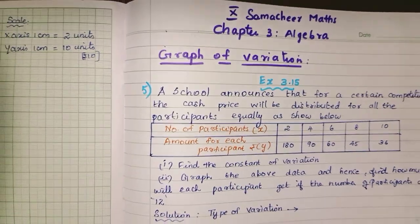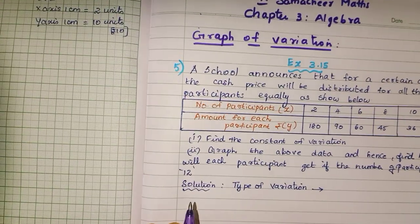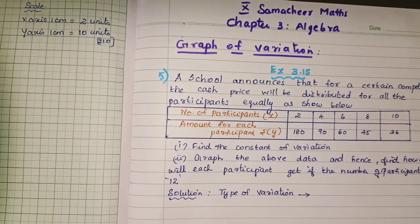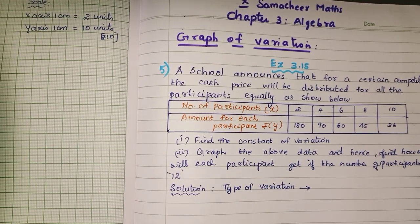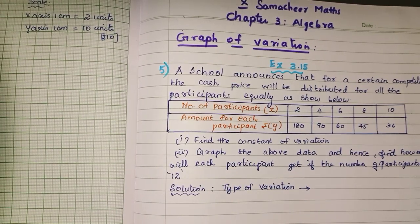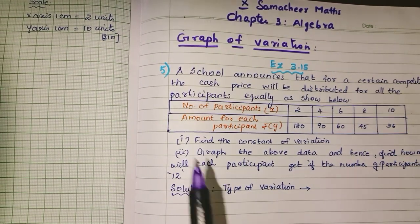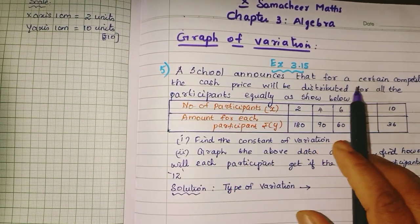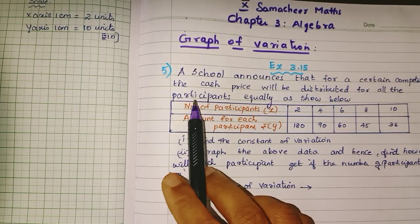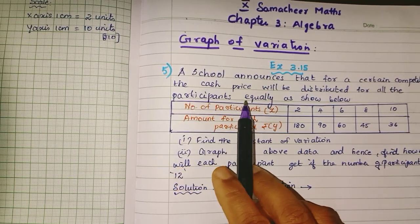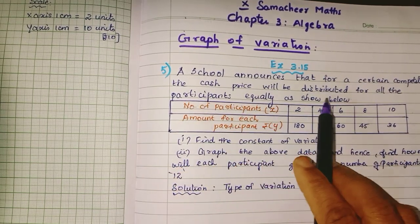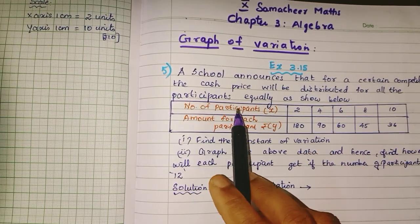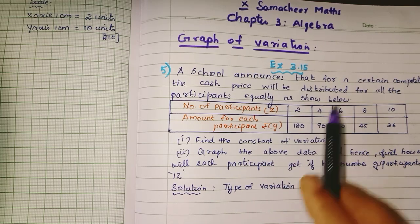Good morning students. In the 10th standard, Maths chapter on Variation in Algebra, 5th sum: A school announces that for a certain competition, the cash prize will be distributed among all participants equally as shown below.